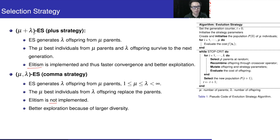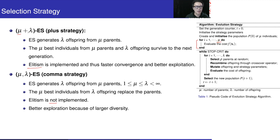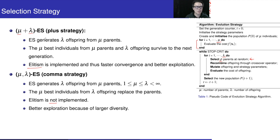Here, μ (mu) is the number of individuals in the population — that is, the population size. λ (lambda) is the number of offspring we are going to generate.